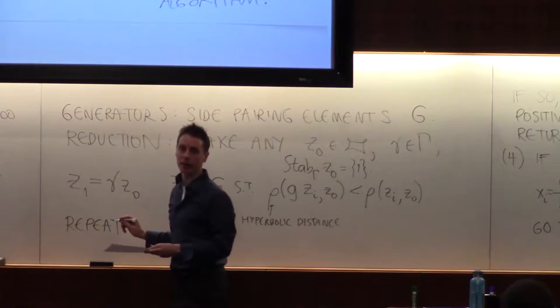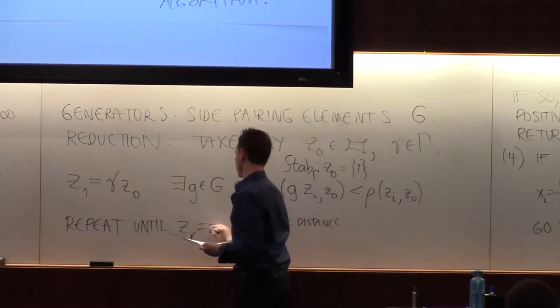So zr equals z0, and then you get a relation, just like we had before.